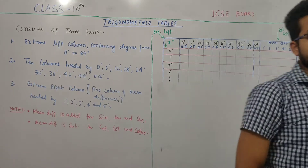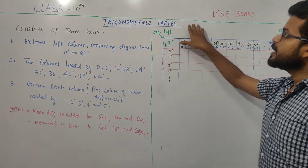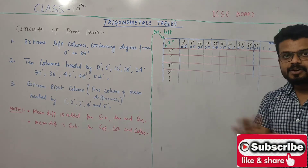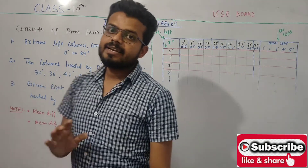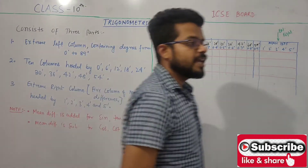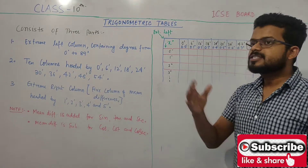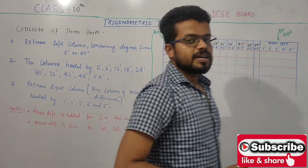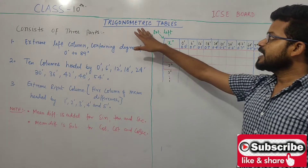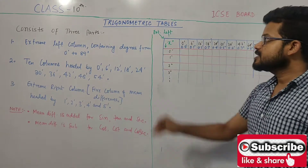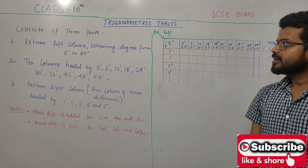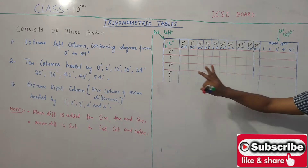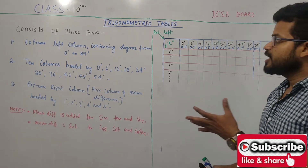Today we are going to discuss the topic which is trigonometric tables. In this topic, we will learn how to find the value of any of the trigonometric ratios like sine, cos, tan, sec, cot, and cosec for whatever angle other than 0 degree, 30 degree, 45 degree — because these are the values we already know. So this video covers how to find, search, and calculate values through this table.